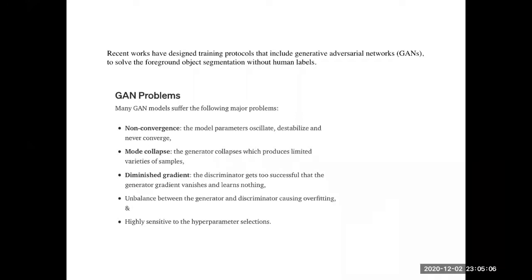Recent works have designed training protocols that include GANs to solve segmentation problems without human labels. But as we've seen, GANs have many problems: non-convergence, where model parameters oscillate and destabilize; mode collapse, which produces limited variety of samples; vanishing gradients, where the discriminator becomes too successful and the generator learns nothing; imbalance between generator and discriminator; and high sensitivity to hyperparameter selection.